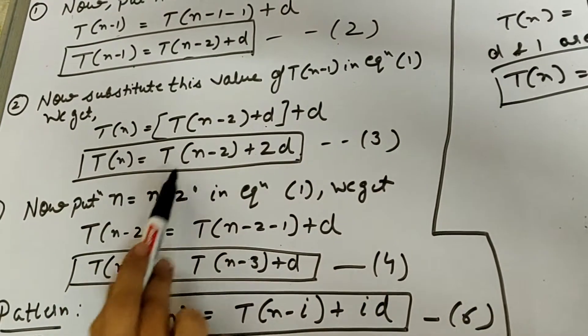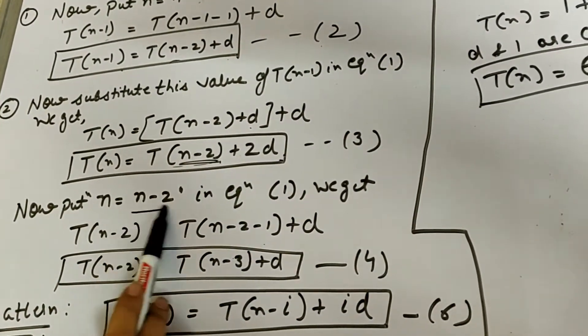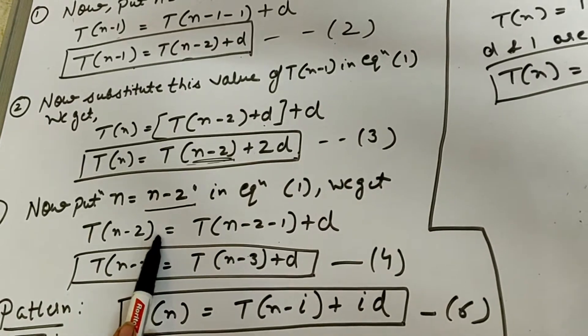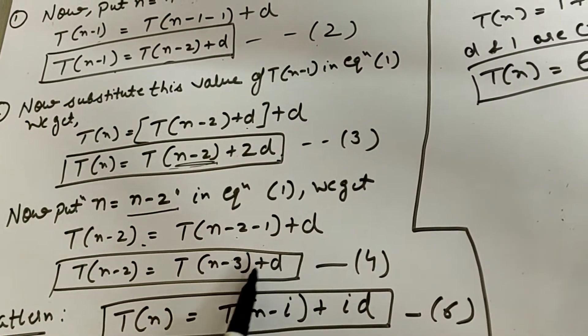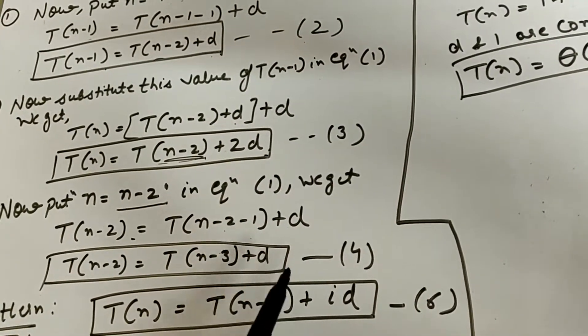Now next one is, if we have here T(n-2), we put it in equation 1. So T(n-2) minus 1 plus d, what will happen here? T(n-3) plus 3d.